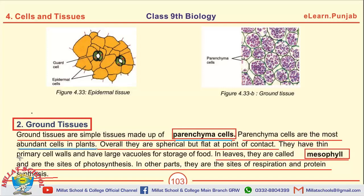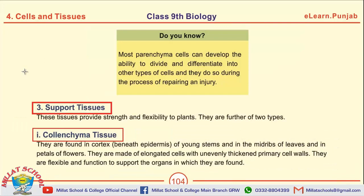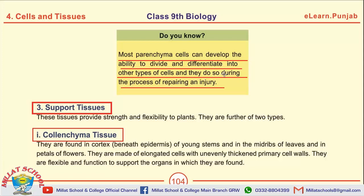Parenchyma cells have thin primary cell walls. Mesophyll cells are responsible for photosynthesis. Most parenchyma cells can develop the ability to divide and differentiate into other types of cells, and they do so during the process of repairing an injury.